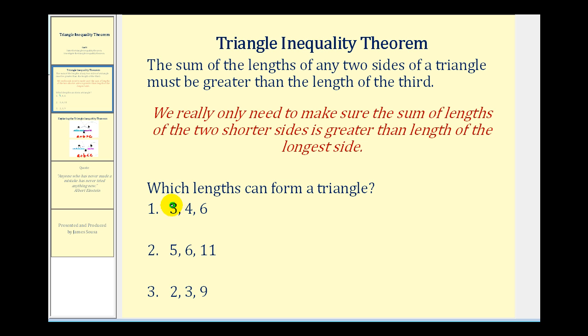In this first example, the two shorter sides have length three and four. And since three plus four is greater than six, a triangle is possible.